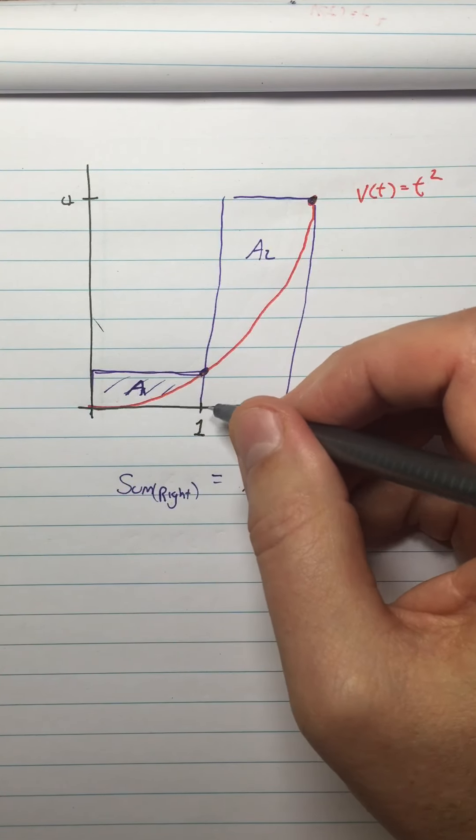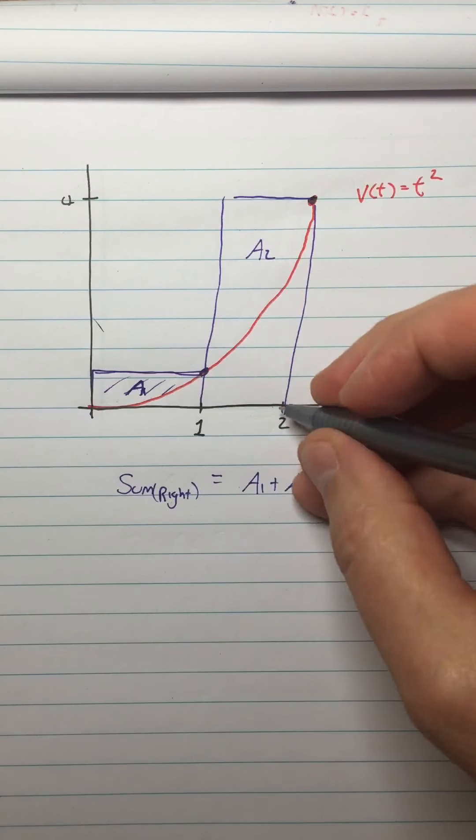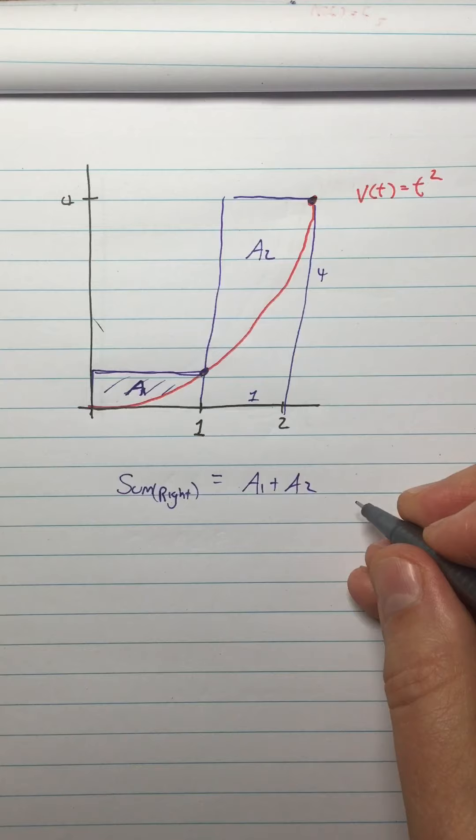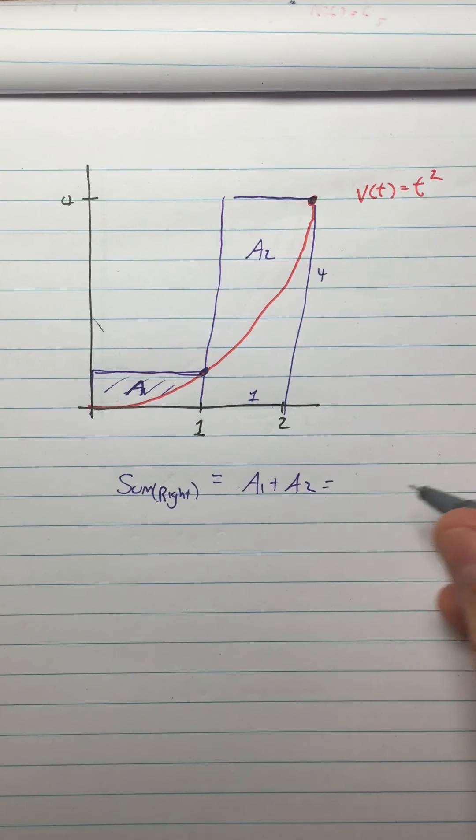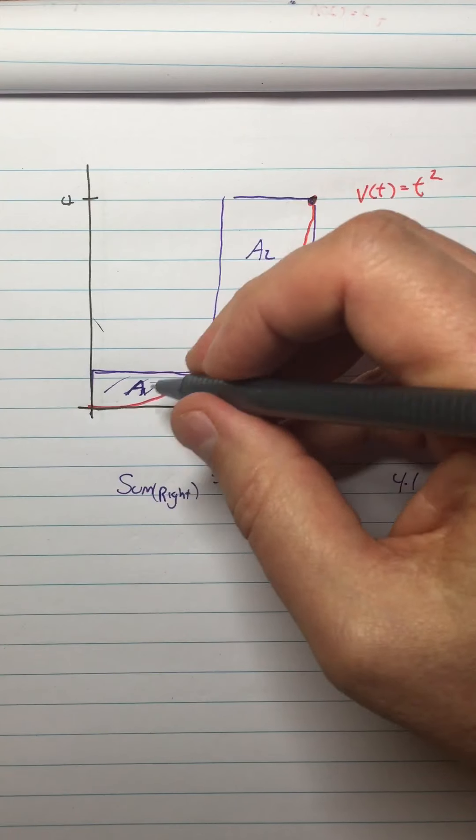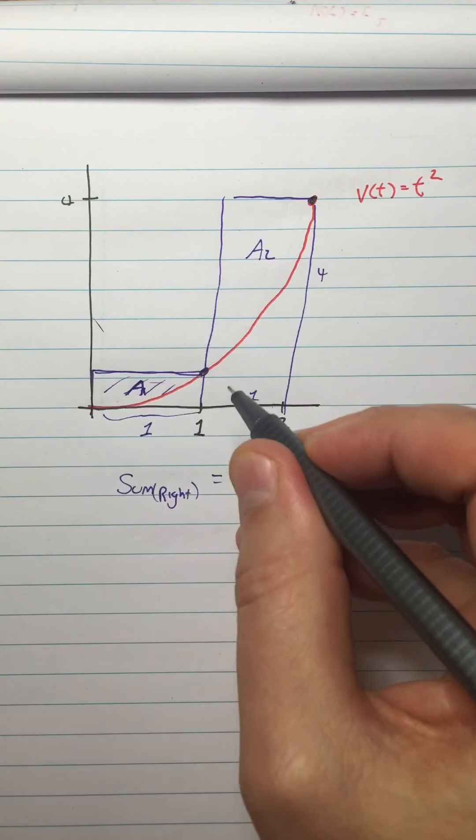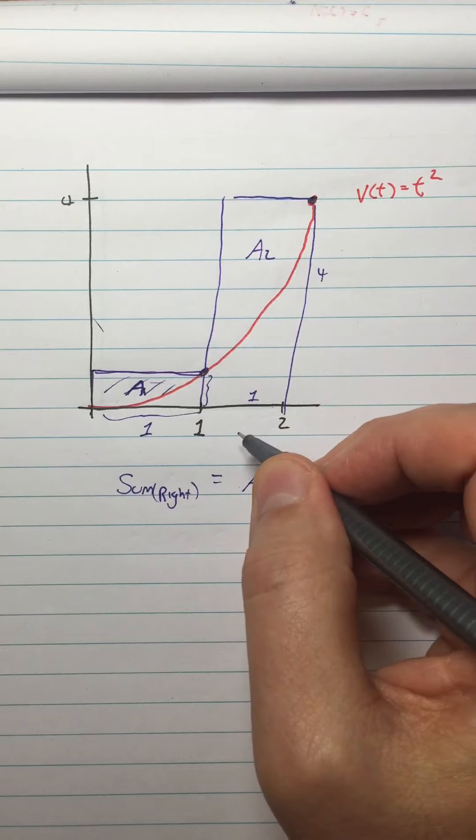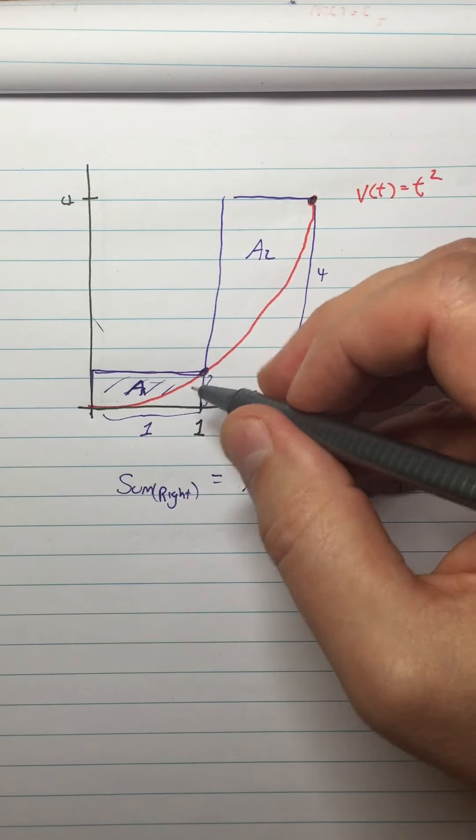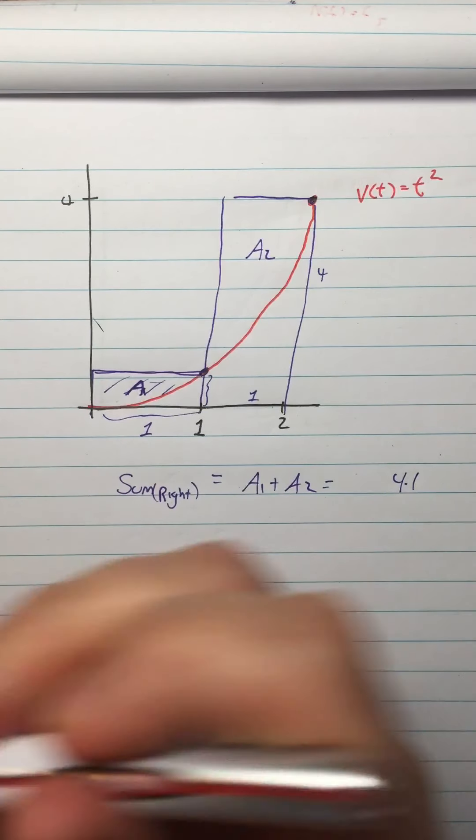And area 1, well let's see. Area 2 is easy to get because I know that this height is 4 and this distance is 1. So it's 4 by 1. So that area 2 is 4 by 1. But what's area 1? Well in order to know that, I know that the base of this rectangle is 1. But what's the height of this rectangle? Well, I know that the curve is v of t equals t squared. So I can figure out what the coordinates of this point are. This is 1.